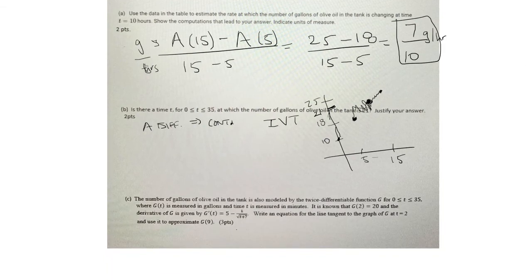And now the last one, we're given a function, well actually we're given g of 2 is 20. And g prime of t is 5 minus 1 over the square root of t plus 7. And we're going to want to find a tangent line at the point t equals 2 to approximate g of 9.